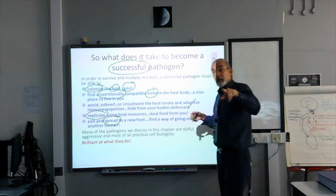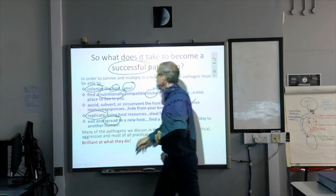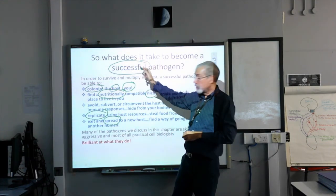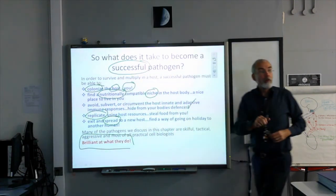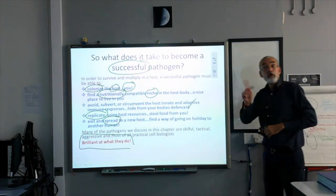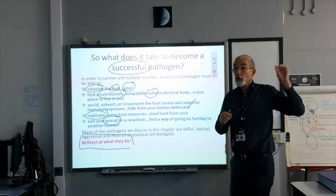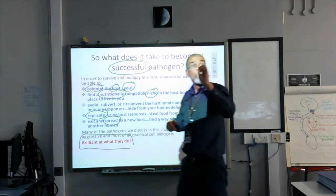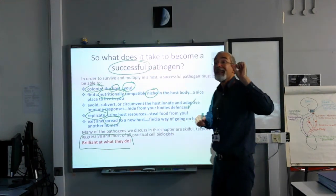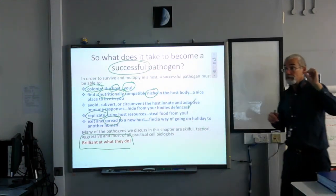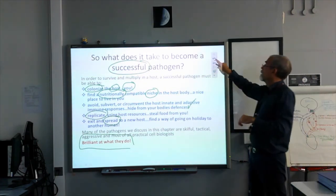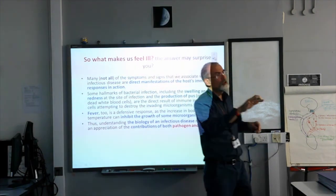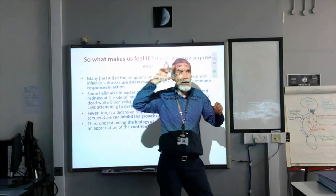What I want to take away from this slide is that to be successful — and hundreds of thousands of pathogens are — they are brilliant at what they do. Do not be confused because they are tiny. Do not be confused because they are often called simplified versions of a human cell. They are brilliant at what they do.